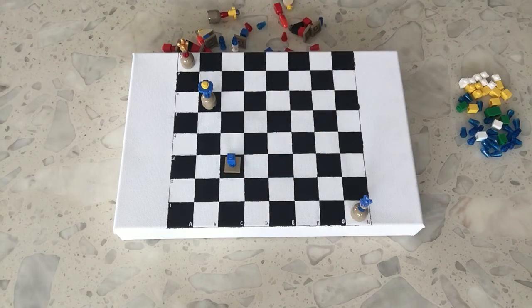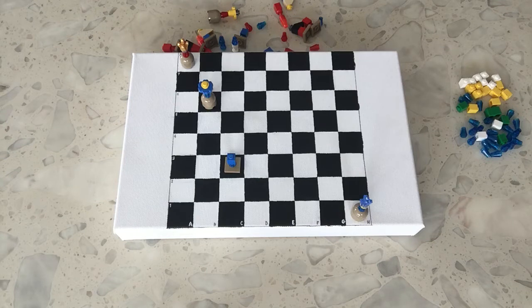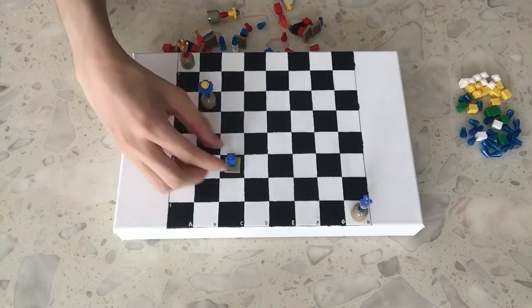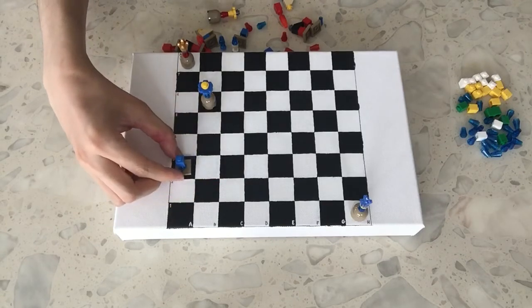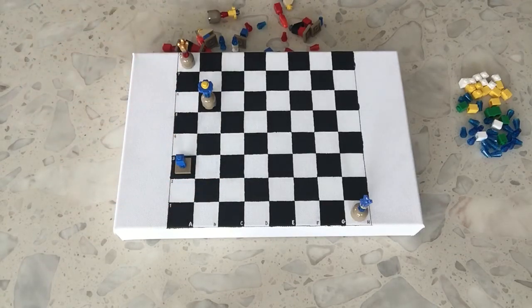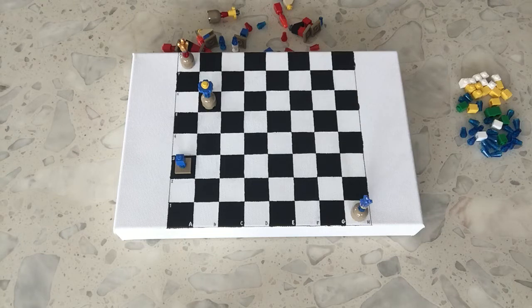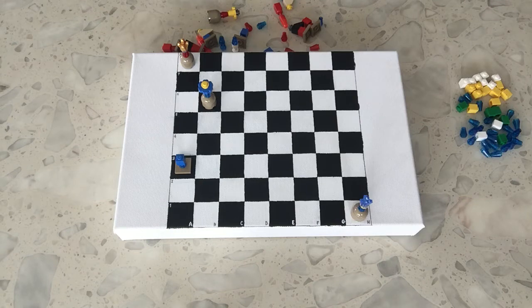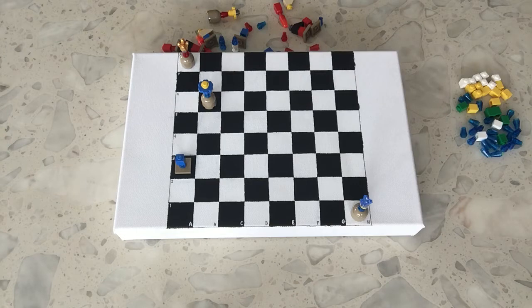However, whenever a move that creates a situation where it is impossible to save your king, for instance, I move my rook over and now this king is in danger, then the attacking player declares checkmate. The game is over and he wins.